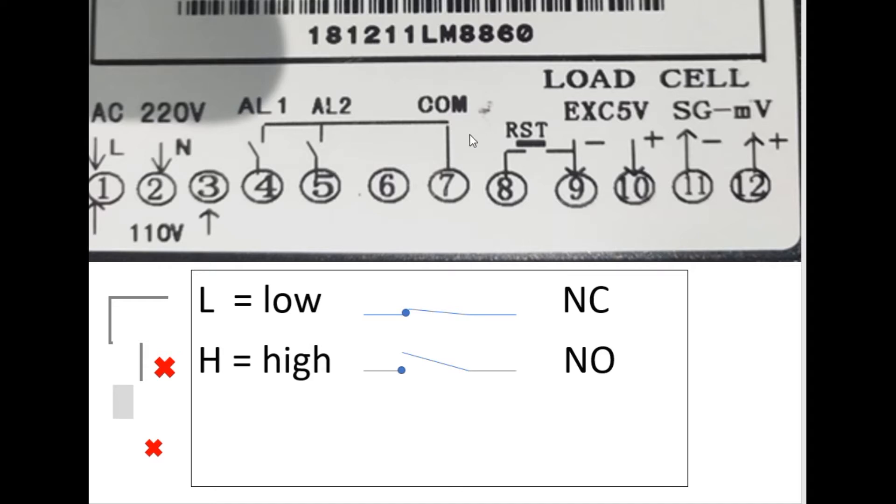But the problem is that they share the same common, number seven. Number six is nothing connected. Number eight and number seven you can create a switch to reset the scale. Nine, ten, eleven, twelve is the load cell connection, and in my previous drawing I showed you where the color should be connected.